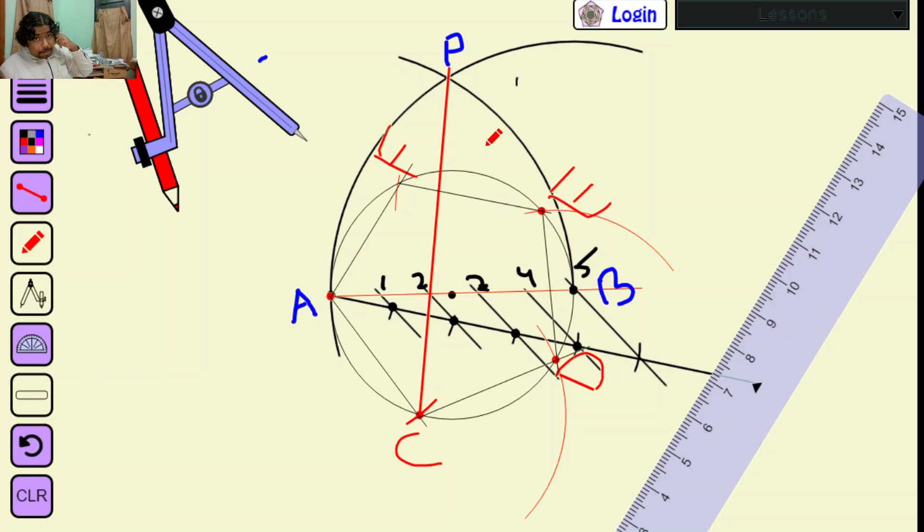Then you have to connect point P with point number two and extend it. Then draw the arc and cut this circle into equal number of parts. Automatically you will get an equal number of parts - the same number of divisions you have done for the diameter.